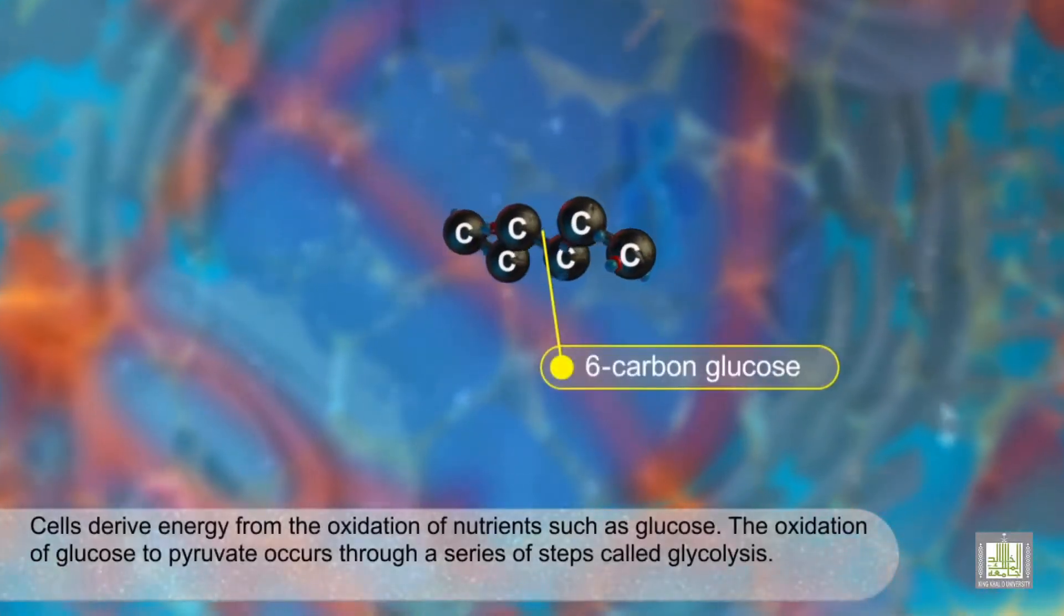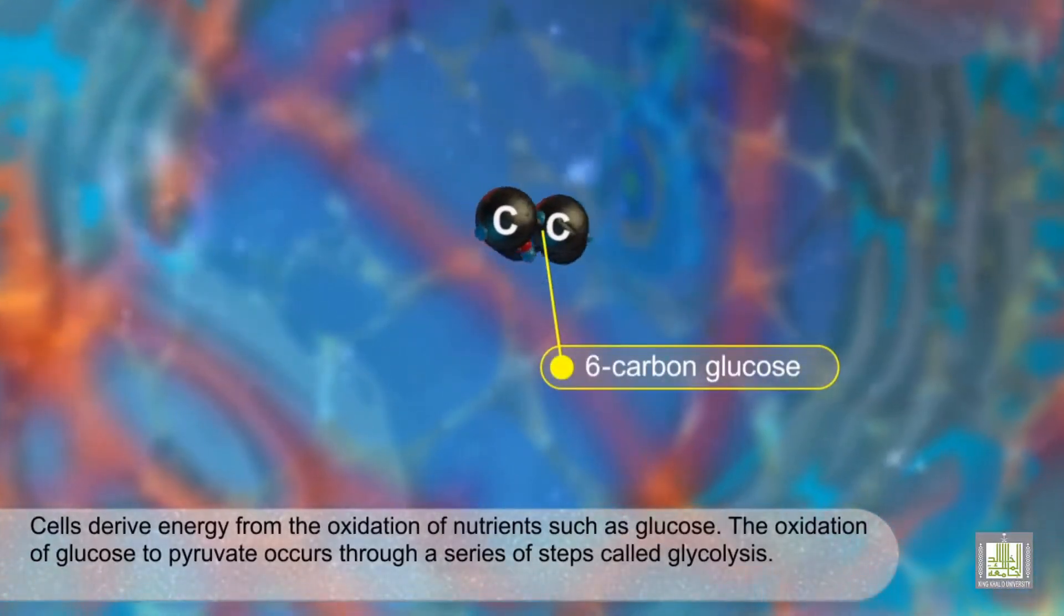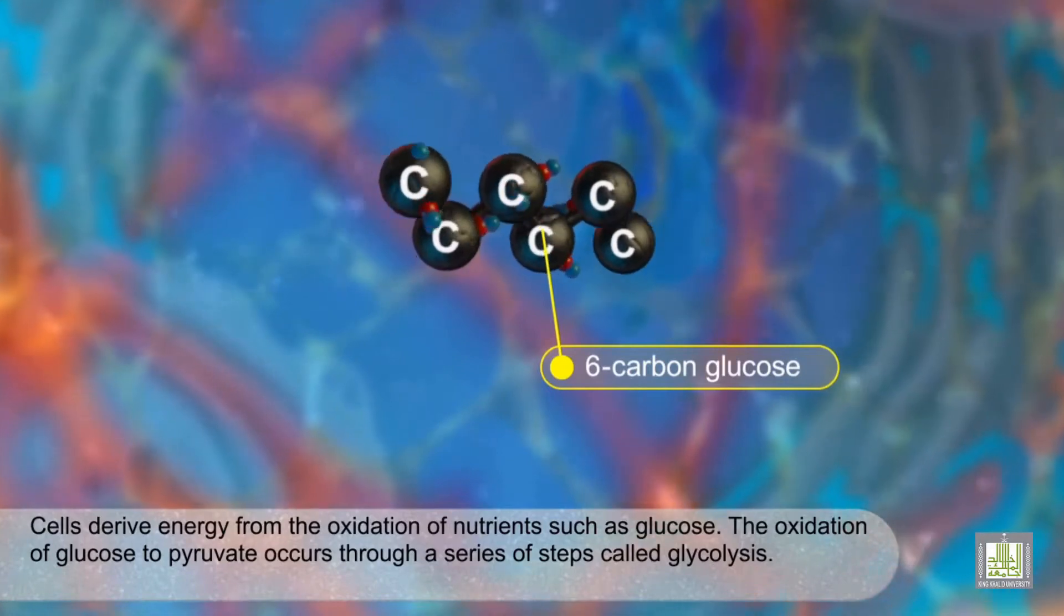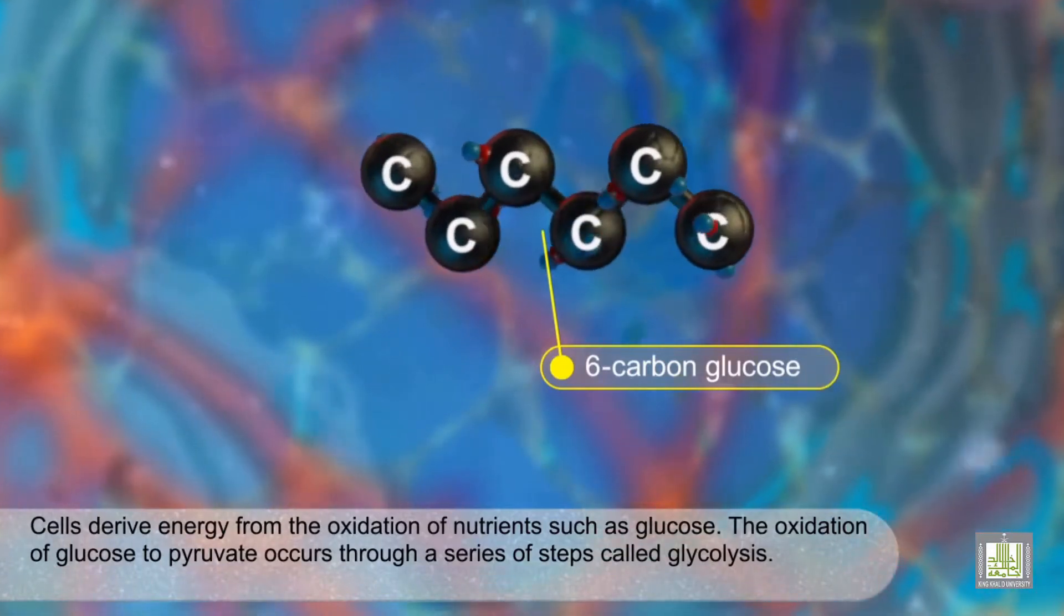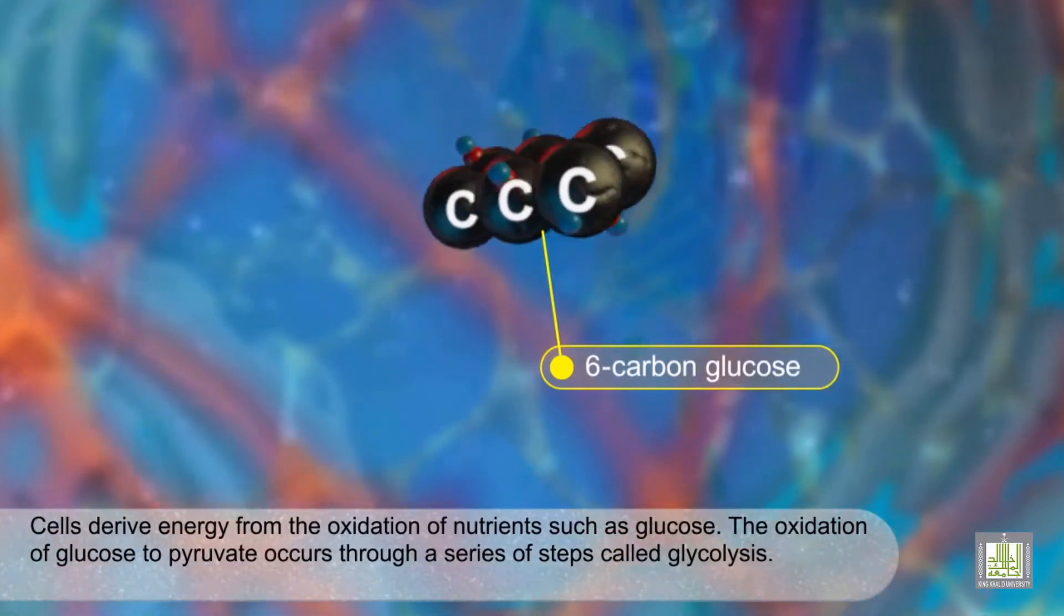Cells derive energy from the oxidation of nutrients such as glucose. The oxidation of glucose to pyruvate occurs through a series of steps called glycolysis.